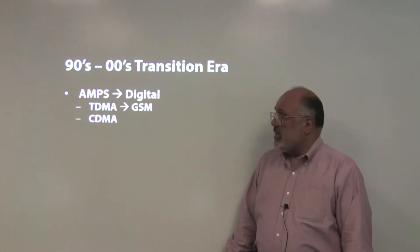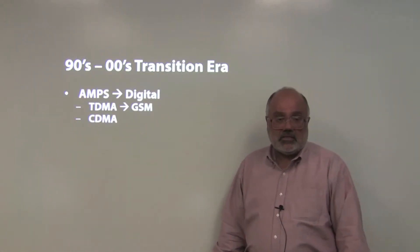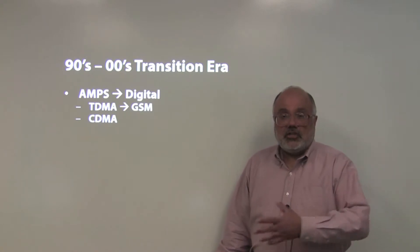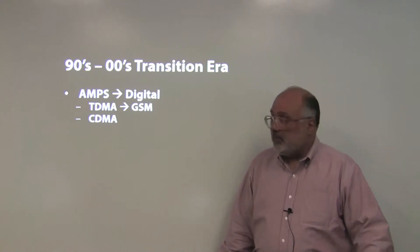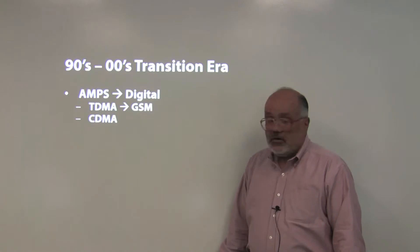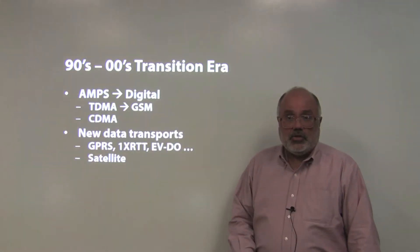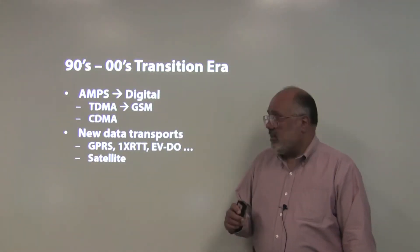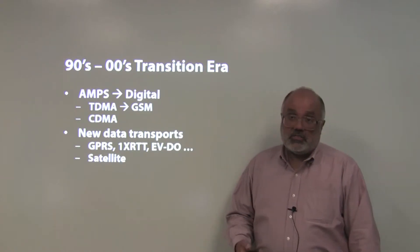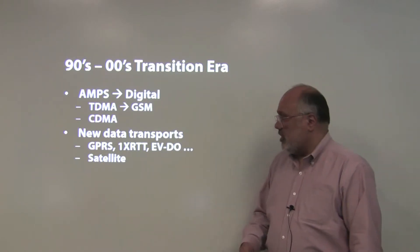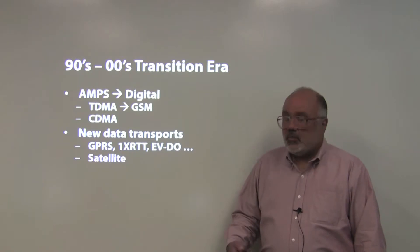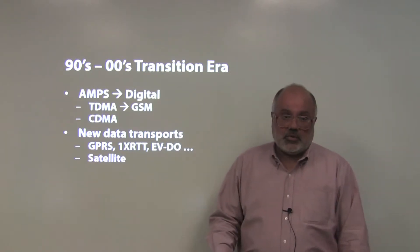There was a transition. In the mid-1990s into the 2000s, analog amps changed to digital cellular. In the late 1990s, TDMA was introduced, became GSM, CDMA was introduced and is still in use today pretty heavily. There were new data transports, the key here. There was a new transport service called GPRS, General Package Radio Service. I'm not going to go into too much detail about these transports such as 1XRTT or higher speed transports such as EVDO. The point was that there were new digital data transports available.